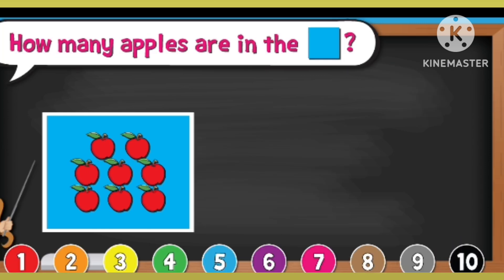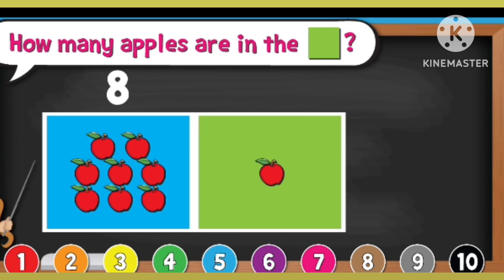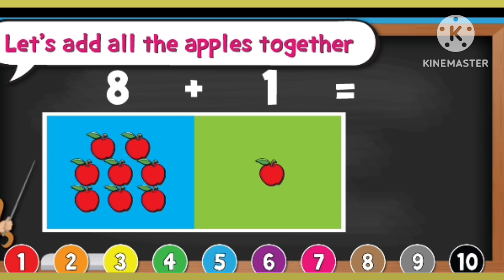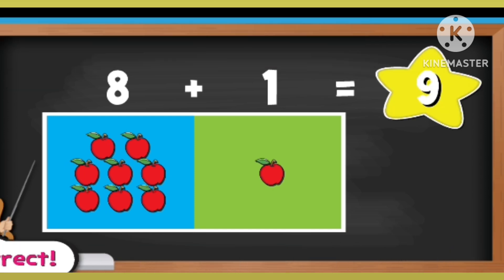How many apples are in the blue square? 1, 2, 3, 4, 5, 6, 7, 8. How many apples are in the green square? 1. Let's add all the apples together. 8 plus 1 equal to 9.